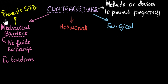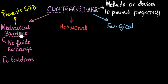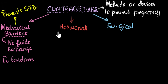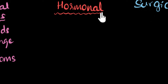One thing I need to be very clear: when I say the word 'prevent STD' or 'prevent pregnancy,' I don't mean 100%. These contraceptives are never 100%. They decrease the chances of pregnancy and they decrease the chances of catching an STD. With that in mind, let's move on to the next method — the hormonal method.